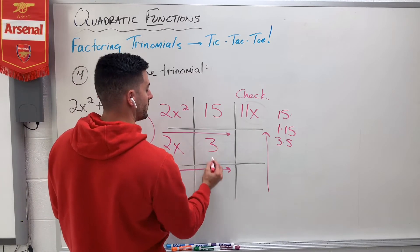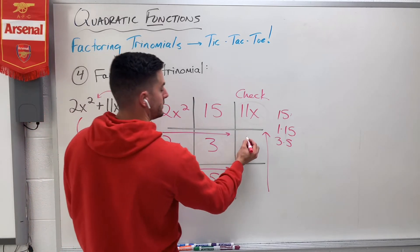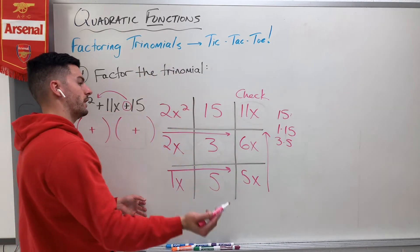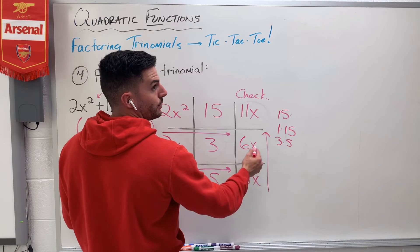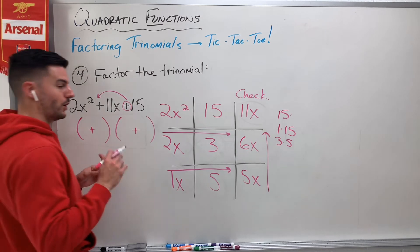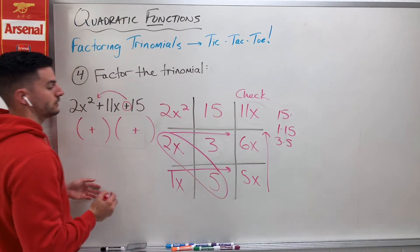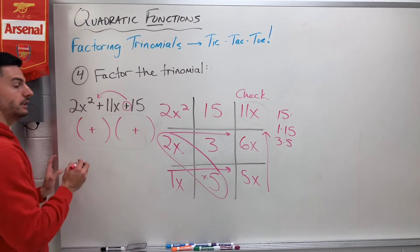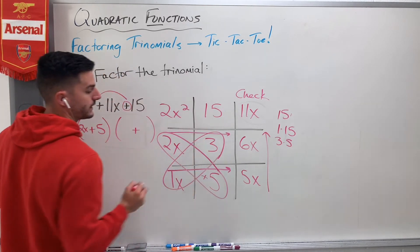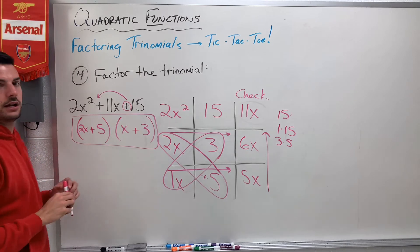Let's flip them around and check. I do 2x times 3 and get 6x. And then 1x times 5 is just 5x. So then I check — does 5x plus 6x equal 11x? Doggone it, it sure does. So I found my pair. That means I'm done, I just have to group together my answers. So 2x and positive 5 is one of my groups: 2x plus 5. And my other group — 1x and 3, so x plus 3. And that is my answer.